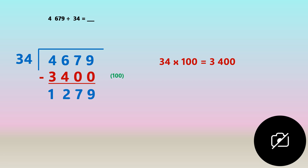How many groups of thirty four can go into one thousand two hundred and seventy nine? We use our clue board, which is multiplication. We're going to halve the hundred and see if fifty works. Thirty four times fifty gives one thousand seven hundred — that's too large. So we estimate lower and try thirty. Thirty four times thirty is one thousand and twenty.